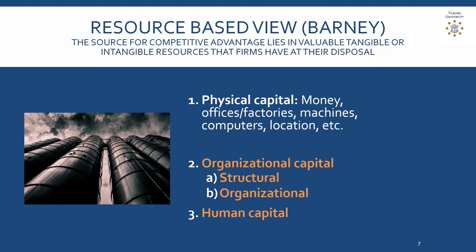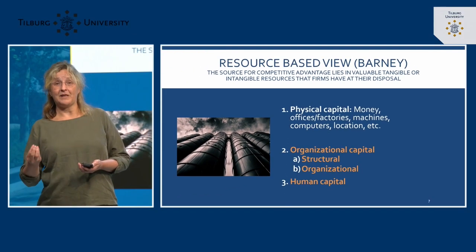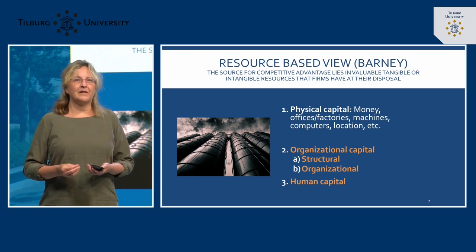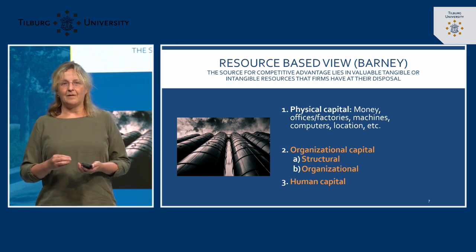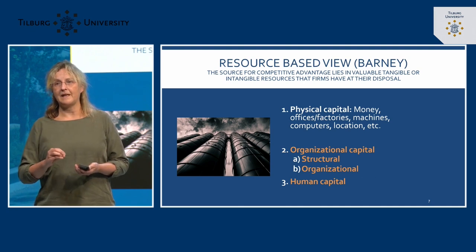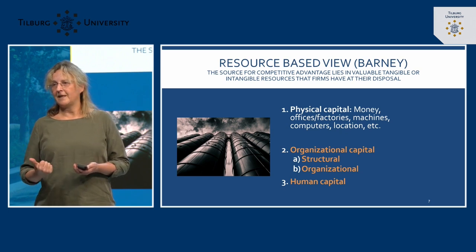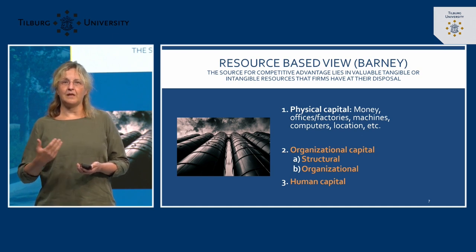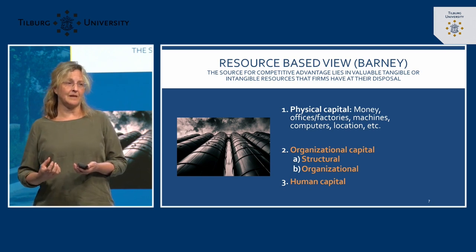Take soccer: if you have an excellent team that works together very well, consisting of high-performing individuals, chances are you will do better in the competition than a club of Sunday amateurs. Barney's theory says that if you want to understand the resources that matter to organizations, you need to distinguish three categories. The first is physical capital — all the things on the bank account of the organization: the offices, the factories, the machines, the materials, the computers — all the hardware of the organization.